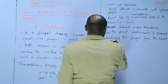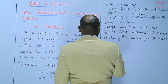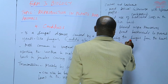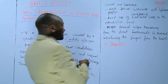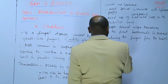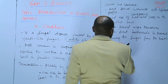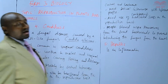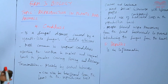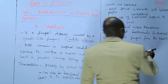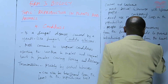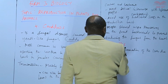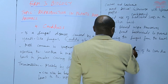Number five is hepatitis. Hepatitis is an inflammation of the liver — it is a liver disease. It doesn't mainly affect the reproductive tract, but it is sexually transmitted as well. It is an inflammation of the liver due to damage of the liver cells.